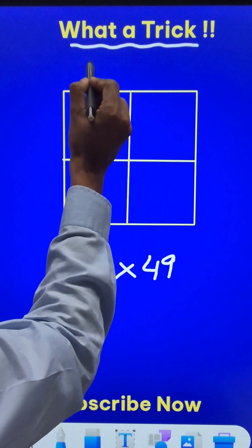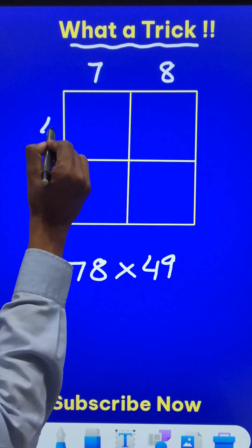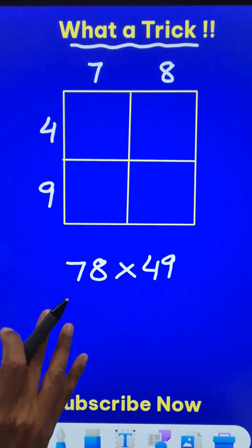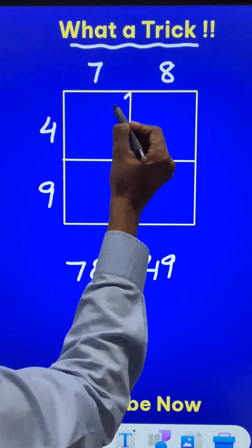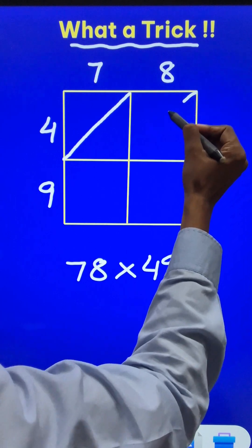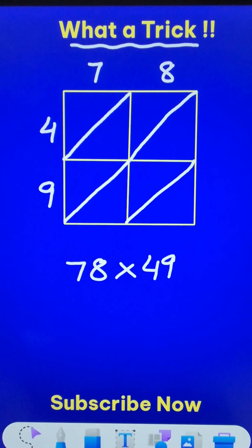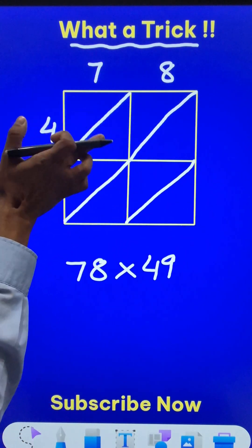78 is to be written on top here like this and 49 on the left like this. Then we have to draw the diagonals. I draw the diagonal here and the diagonal across like this and the diagonal across like this. I have separated the cell into two triangles.